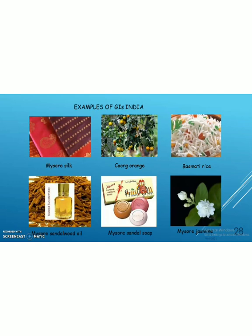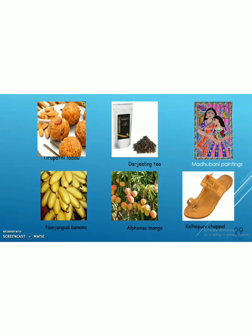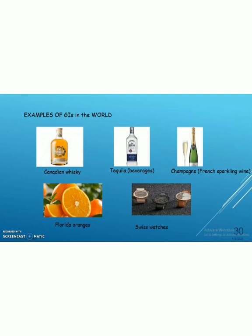Some important examples of geographical indications in India are: Mysore silk, Coorg orange, Basmati rice, Mysore sandalwood oil, sandal soap, Mysore jasmine, Tirupati laddu, Darjeeling tea, Madhubani paintings, Alphonso mango, Kolhapuri chappal, and others. Similarly, some important geographical indications in the world are: Canadian whiskey, Florida orange, Swiss watch, etc.